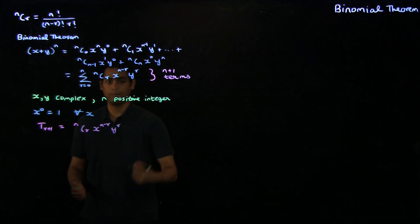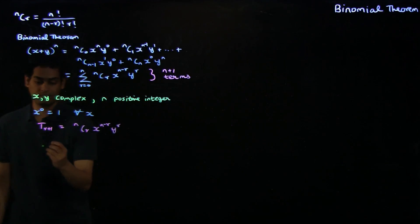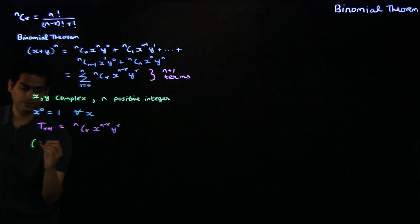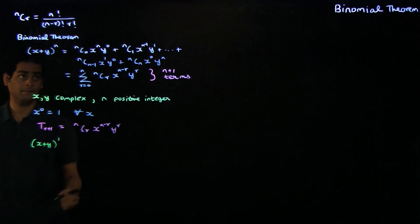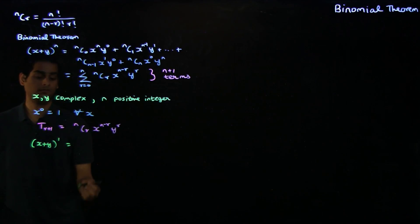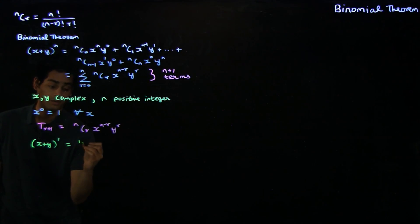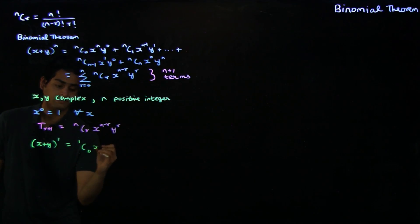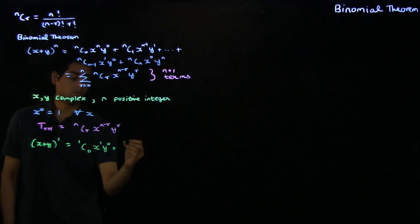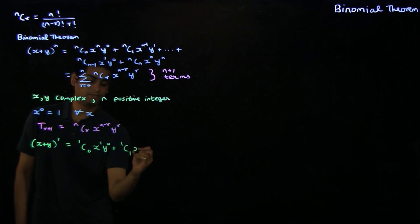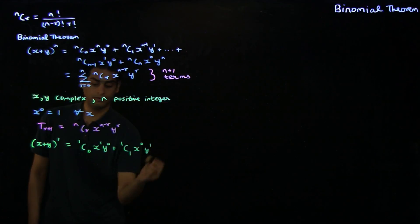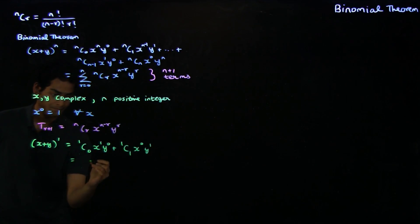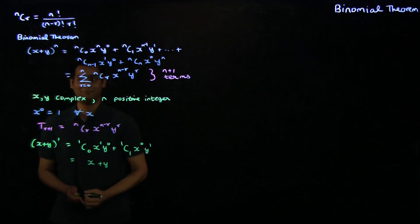To give an example of the application of the binomial theorem, let's look at x plus y to the power 1. From the binomial theorem, we get that this is nothing but 1c0 times x power 1 times y power 0, plus 1c1 times x power 0 times y power 1, which gives us x plus y, which is what we expect.